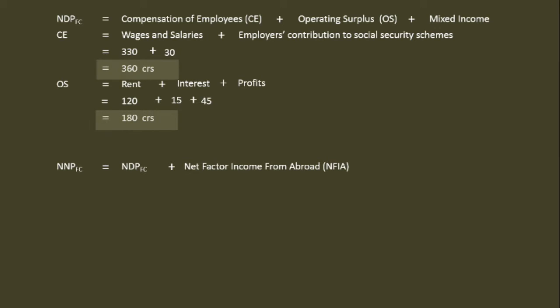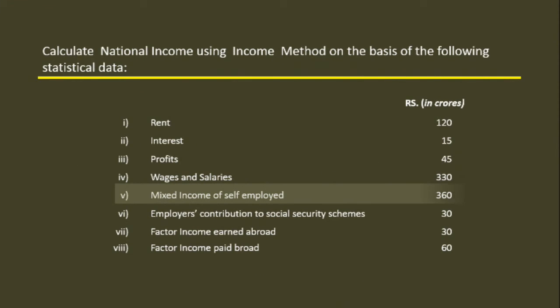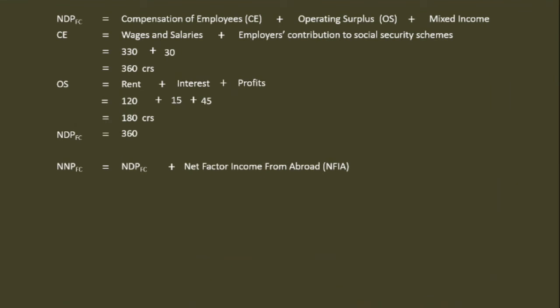We have compensation of employees: 360 crores. Operating surplus: 180 crores. Mixed income is given in the problem: 360 crores. We can now calculate net domestic product at factor cost. It is 360 plus 180 plus 360, which equals 900 crores. Net domestic product at factor cost is 900 crores.